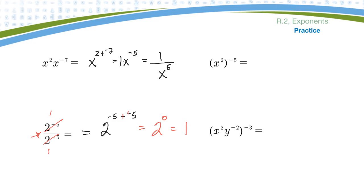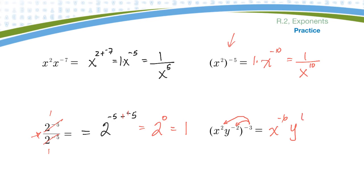Here's another rule. Power of a power: multiply exponents, so it would be x to the negative ten. If it's x to the negative ten, that's the same as one over x to the positive ten. And lastly, power of a product: this minus three has to apply to both things inside the bracket, so it would be x to the minus six times y to the positive six. Again I have a negative exponent, so I should make it positive by slipping it to the other side of the fraction line.